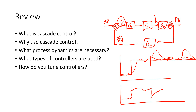A common cascade controller is like a flow controller where you might have an upstream pressure change that's changing the flow. If you can maintain it constant with this inner loop, then you're able to achieve better control. So what we're going to do is erase some of this.